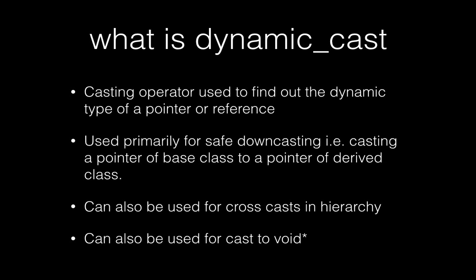Hello everybody, welcome to Simplified in 5. Today we are going to talk about dynamic cast in C++. So what is a dynamic cast? It's a casting operator used to find out the dynamic type of a pointer or reference. It's primarily used for down casting — that is, casting a pointer or reference of a base class to a pointer or reference of a derived class.